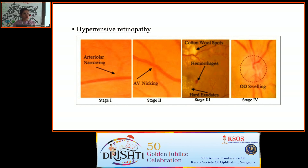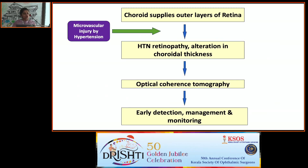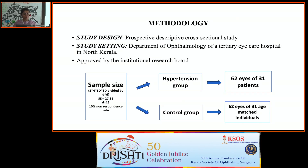Stage one involves arterial narrowing, stage two AV nicking changes, stage three hard exudates, cotton wool spots and hemorrhages, and stage four optic disc swelling. The choroid supplies the outer layers of the retina, and microvascular injury from hypertension causes retinopathy and alteration in choroidal thickness. With optical coherence tomography we can detect these changes, and since ocular changes of hypertension precede systemic changes, this aids in early detection and monitoring.